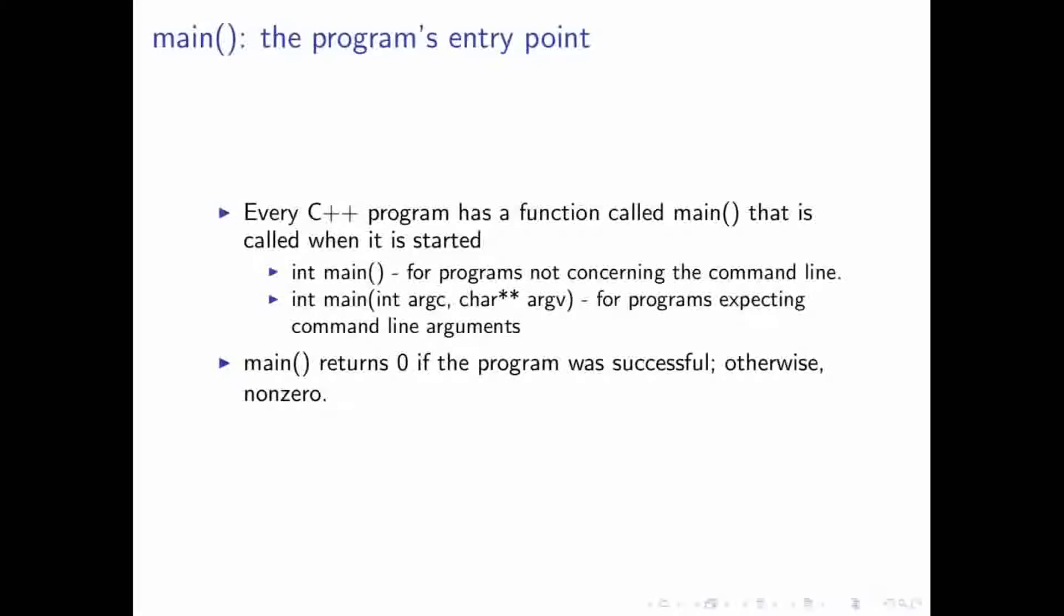So, you have two forms of it that you can use. You have main with no arguments, and those are for programs where you really don't care to take in arguments from the command line. And then we have this other form of main, which we'll probably discuss when we talk about pointers. And those are for programs to where you do want to work with command line arguments. And so, there's a protocol with main that you return zero if the program was performed successfully. Otherwise, you return some non-zero value.